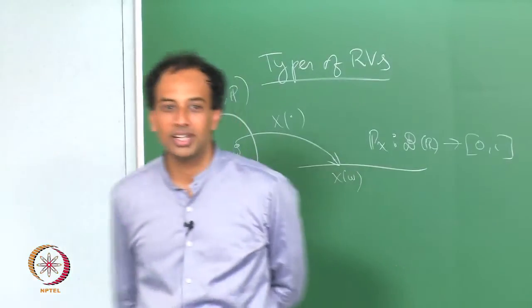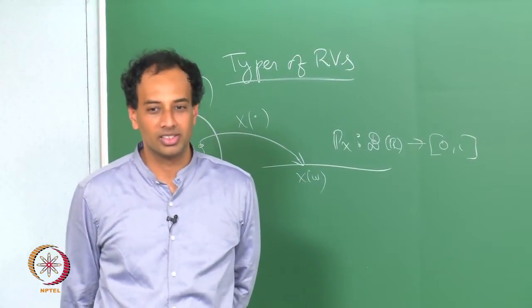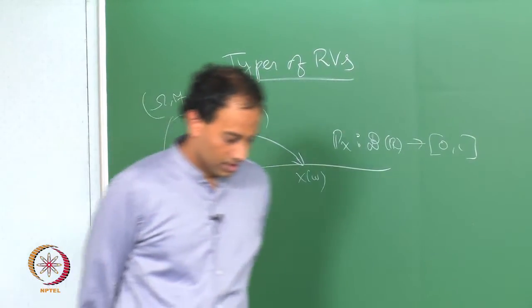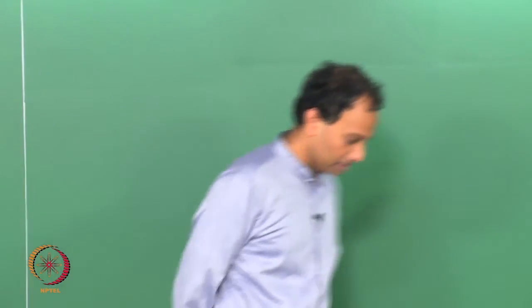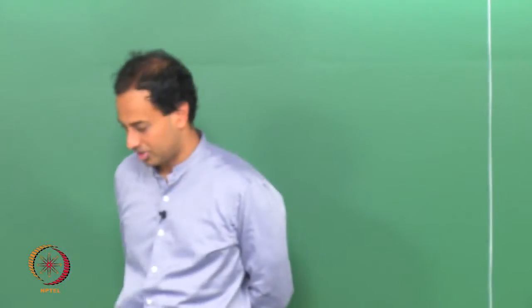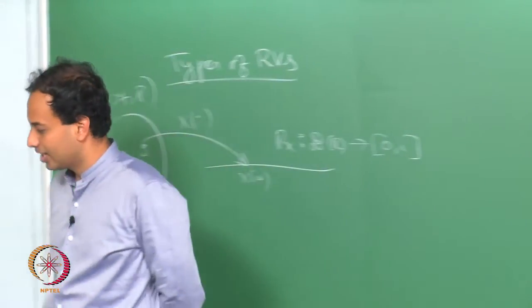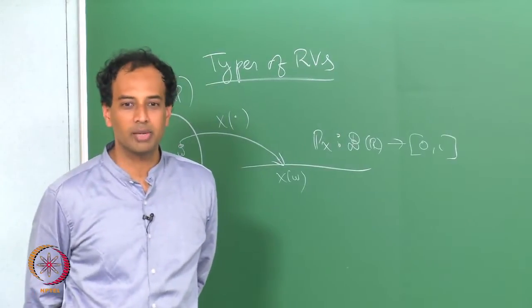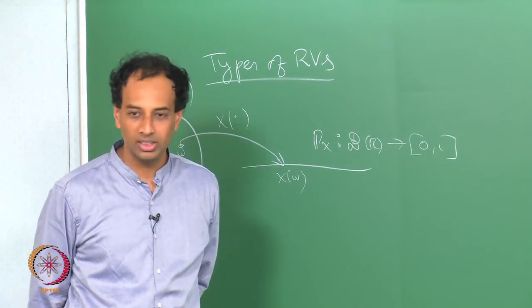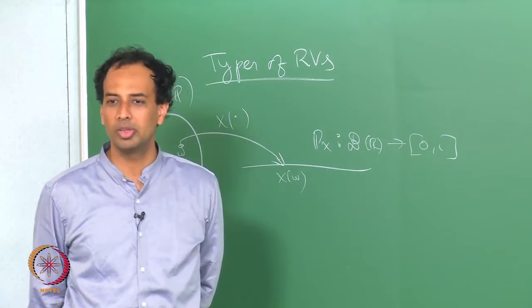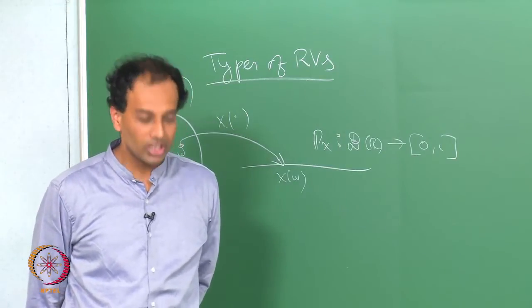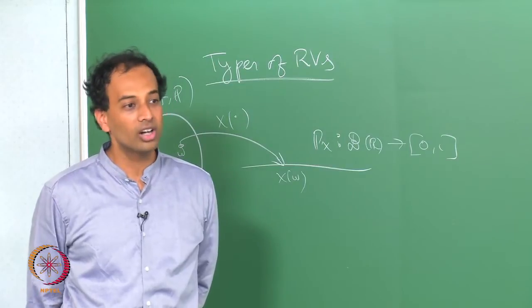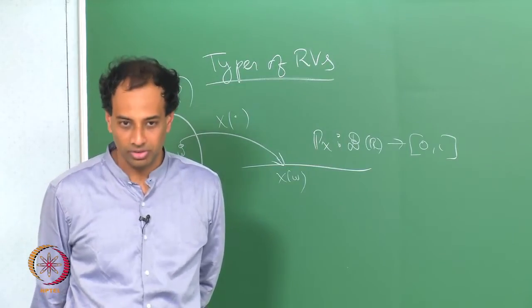You classify random variables into various types based on the nature of the measure induced on the real line — namely, based on the nature of P_x. There is a very fundamental theorem in measure theory that says there are only 3 fundamental types of measure on the real line. Any probability measure on R will fundamentally be one of 3 types, or some combination thereof.